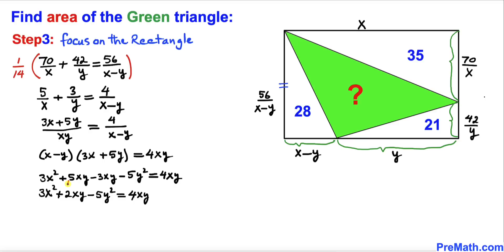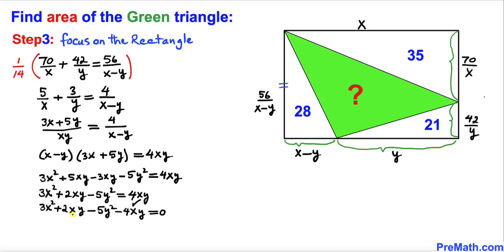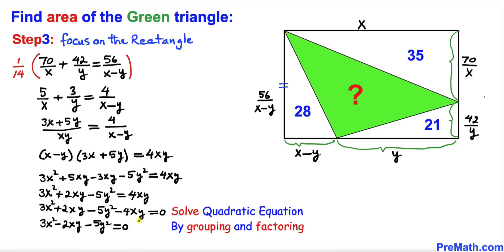Combining like terms: 5xy minus 3xy gives 2xy, so we have 3x² plus 2xy minus 5y² equals 4xy. Moving 4xy to the left-hand side and combining gives us 3x² minus 2xy minus 5y² equals 0. We now have a quadratic equation to solve by grouping and factoring.